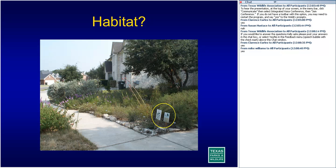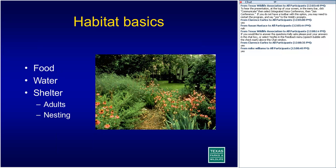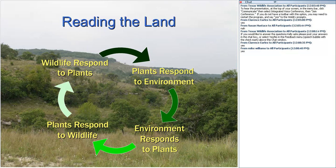Now that we know what habitat is and what it looks like, let's look at what it is. Habitat really is just providing the things we all need to survive: food, water, and shelter — shelter for adults, for weather and predators, and shelter for nestlings as well. It can be done on any size of land. But when you're creating your habitat, it's important to remember that nothing stays the same and nothing is static. Everything changes, and you're never finished.